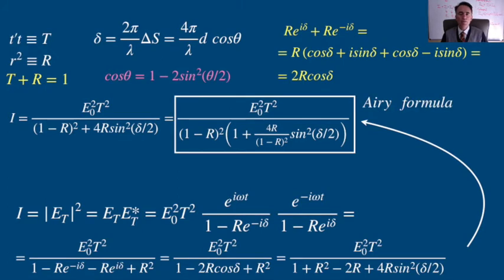This is the Airy formula. It gives the irradiance in terms of the incident amplitude, the phase difference, and the reflectivity.